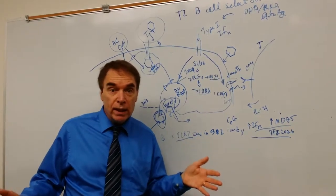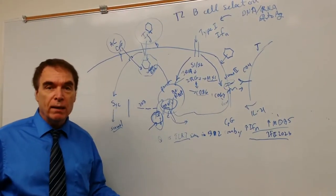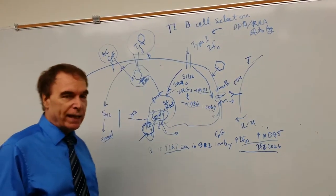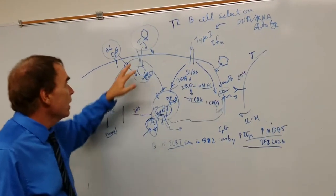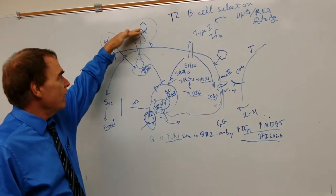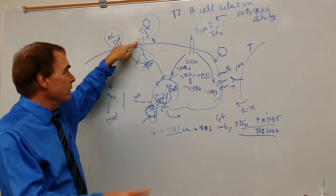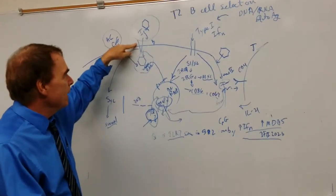It's so we can protect ourselves from pathogens. Antibodies are really good at protecting ourselves from viral pathogens. Here's a virus coming into this B-cell through the IgM receptor, say in a transitional B-cell.